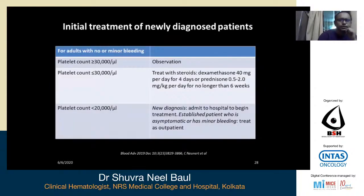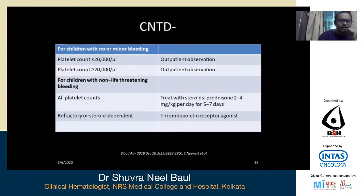For initial treatment of newly diagnosed adult patients with no or minor bleeding: if the platelet count is more than 30,000, observe the patient. If the platelet count is less than 30,000 with minor mucocutaneous symptoms, treat with steroids, preferably dexamethasone or prednisolone. If the platelet count is less than 20,000, admit and begin treatment immediately. For children: platelet count less than 20,000 with no bleeding — outpatient observation. For non-life-threatening bleeding at all platelet counts, treat with prednisolone 2 to 4 mg/kg for five to seven days; refractory cases may use thrombopoietin receptor agonists.